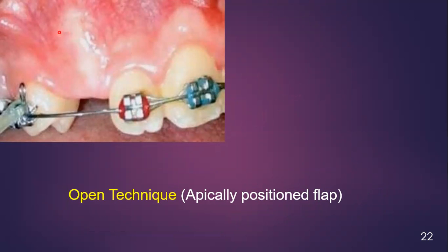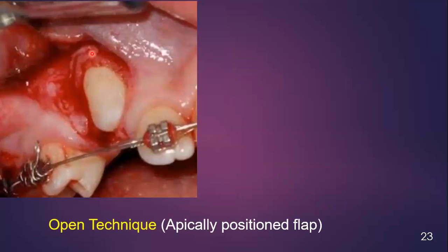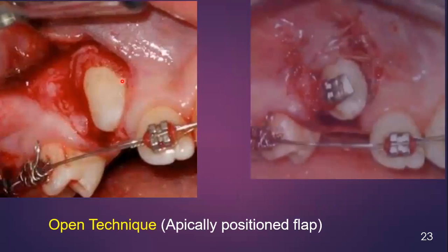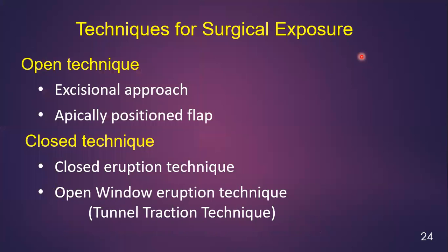Here is another example showing the area of the impacted canine with a bulge and thinning of the mucosa over its crown. You can see the impacted canine is touching the lateral incisor. A four-corner apical flap was reflected, and the crown is fully exposed. A bracket has been placed and the flap has been repositioned in its original position.